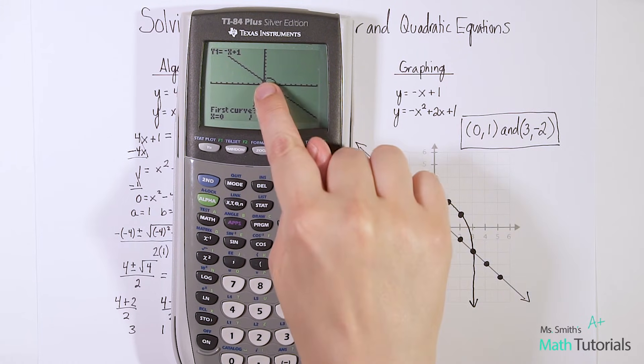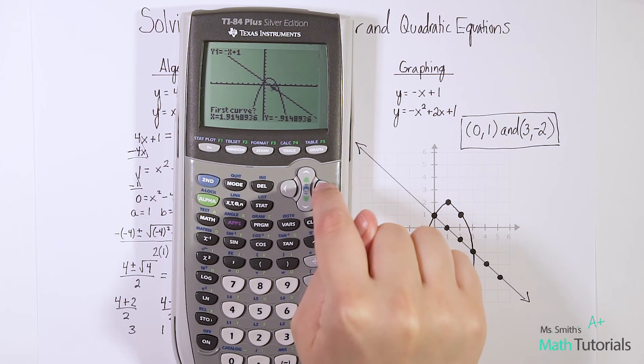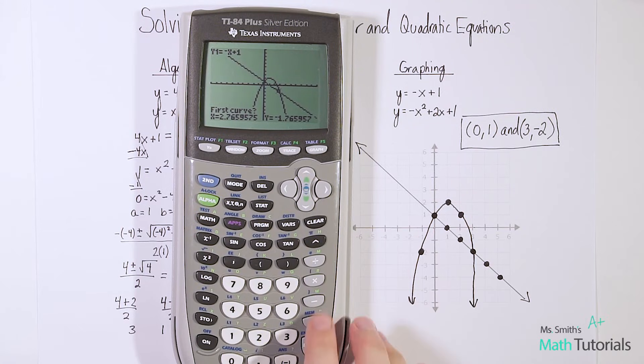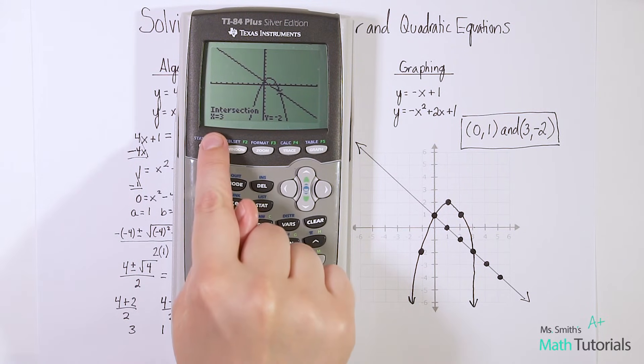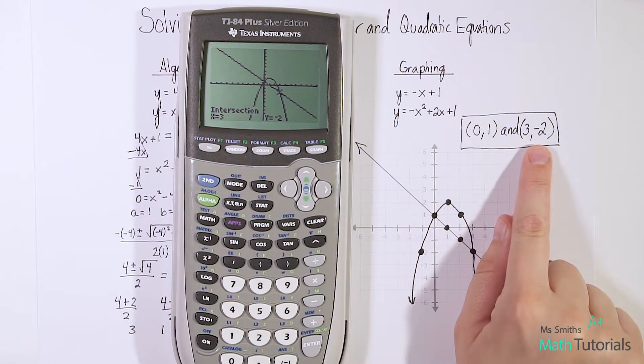This time I'm going to take my spaceship over to the other intersection. Right there. And just get as close as you can. One, 2, 3. And see, I see my other intersection falls at 3, negative 2. 3, negative 2.